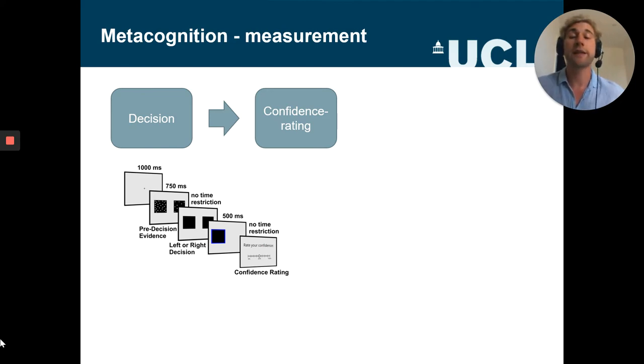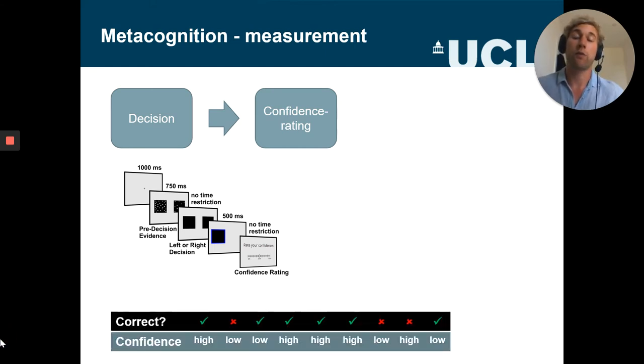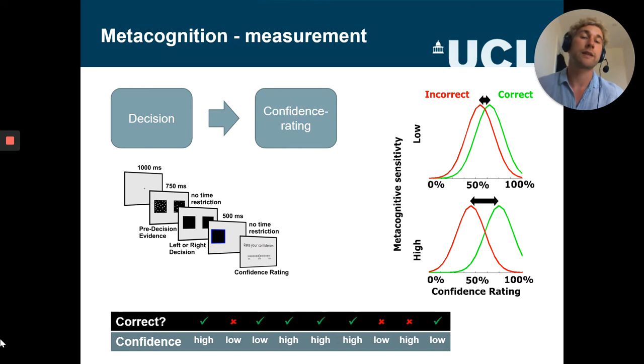Metacognition describes the ability to discriminate between correct and incorrect decisions based on confidence. Basically over many trials, confidence ratings should statistically track choice accuracy whereby confidence should be higher when the correct decision was made. We can formalize that by looking at the confidence distributions for correct and incorrect decisions. If these two distributions are really overlapping, that means there's no good differentiation, resulting in low metacognitive ability, whereas high metacognitive ability is described by a large separation in the confidence distributions.